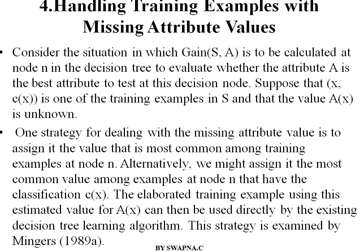The fourth issue in Decision Tree Learning is handling training examples with missing attribute values. Missing attribute values means if any attribute's possible value is not specified in the instances. If we take a collection of instances to train the machine to perform classification, and some attribute values are missing, how can we handle that?